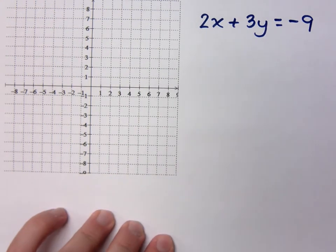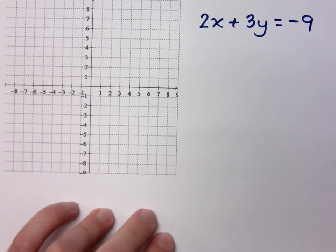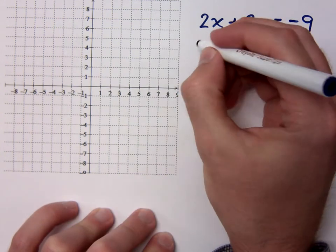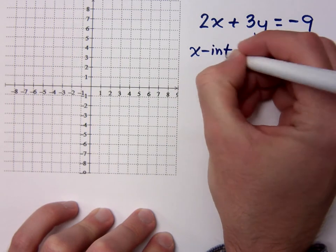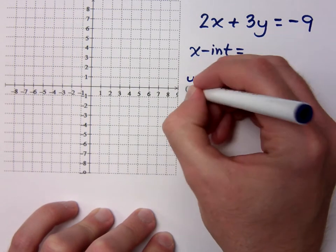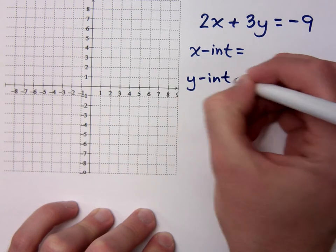Let's take a look at this linear equation, 2x plus 3y equals negative 9. What I want us to do here is find the intercepts, and then graph according to the intercepts. So this is something where, if this were a test or a quiz, I would have the x-intercept and the y-intercept already written out, and you just have to tell me what they are.